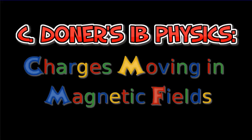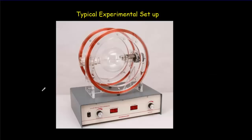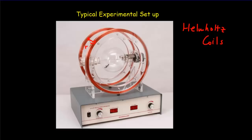Let's see what happens when charges move through magnetic fields. Here's a basic experimental setup. These coils here are called Helmholtz coils, and they're used a lot to produce a uniform magnetic field, in the same way that a solenoid can produce a uniform magnetic field. It turns out the distance between the coils will be equal to the radius of the coils, and if you do that, you get a very uniform field that will either be going into or out of the coil.